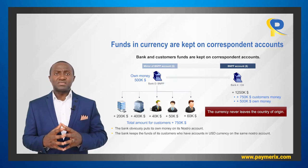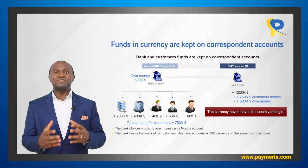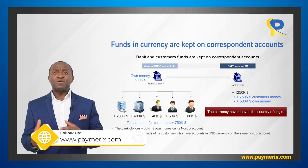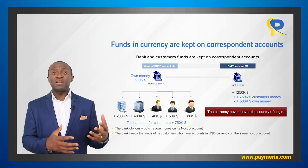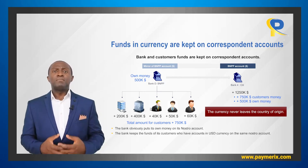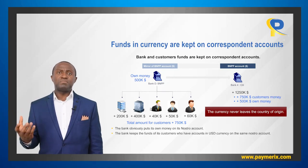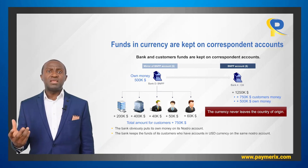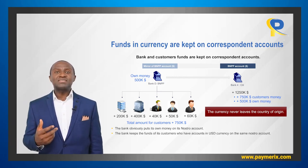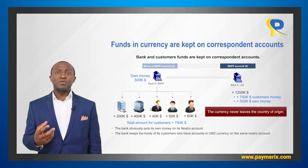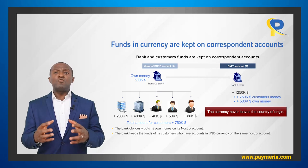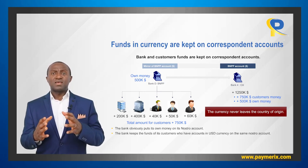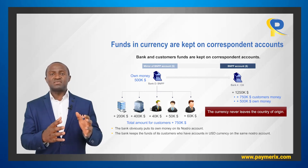There is a key rule in cross-border payments: the currency never leaves the country of origin. Customers in France can open accounts in USD with BNPP. Then BNPP will open accounts in its books for those customers; each customer sees the amount of money in currency available on his account, and BNPP does the bookkeeping. But the funds are kept on the Nostro account of BNPP with Citi. For Citi, it is the money of BNPP — but in reality, BNPP may have $500,000 of its own money and $750,000 of customers' money. Citi does not know how the $750,000 are distributed among the customers; that is the business of BNPP.